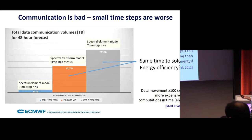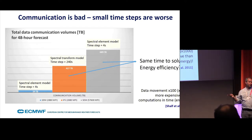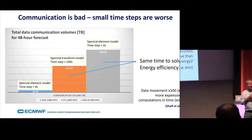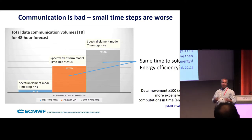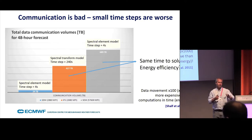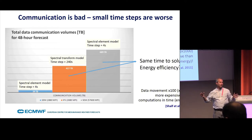Communication is bad, but small time steps are worse in NWP because we need a reasonable time to solution. We have a critical time window — the forecast must be done in one hour. So even with a perfectly scalable model, if the time step becomes a fraction of a second it simply will not work.